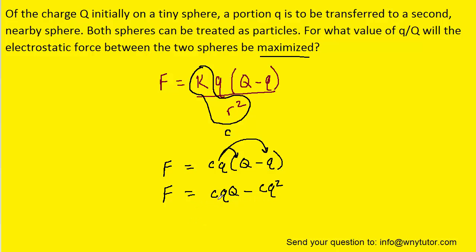Before we can take the derivative of this equation we need to identify the variable. Let's recall that C is a constant. Capital Q is also a constant because that was the original amount of charge on the tiny sphere. It is lowercase q that is indeed the variable.